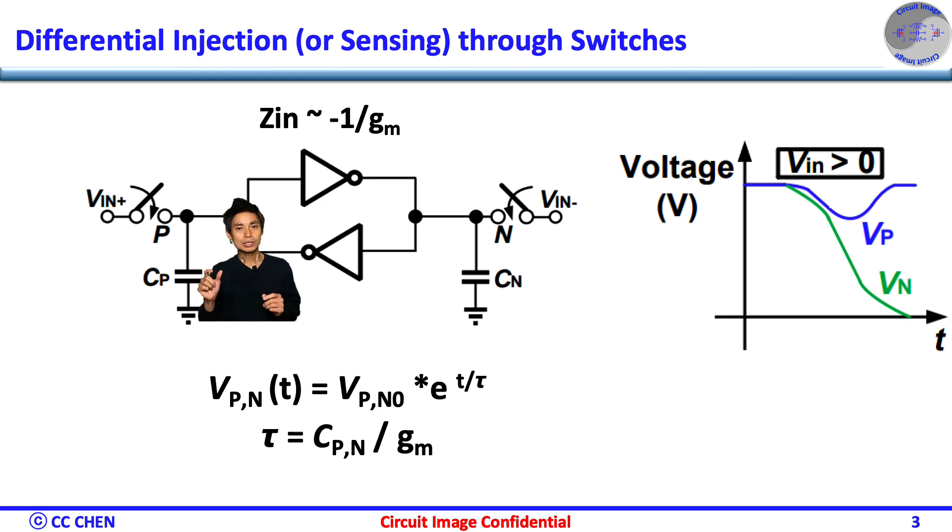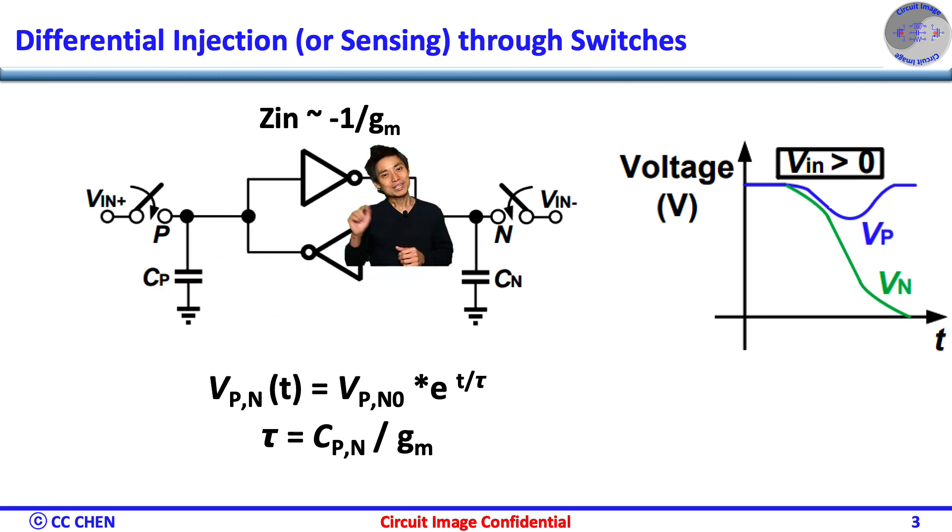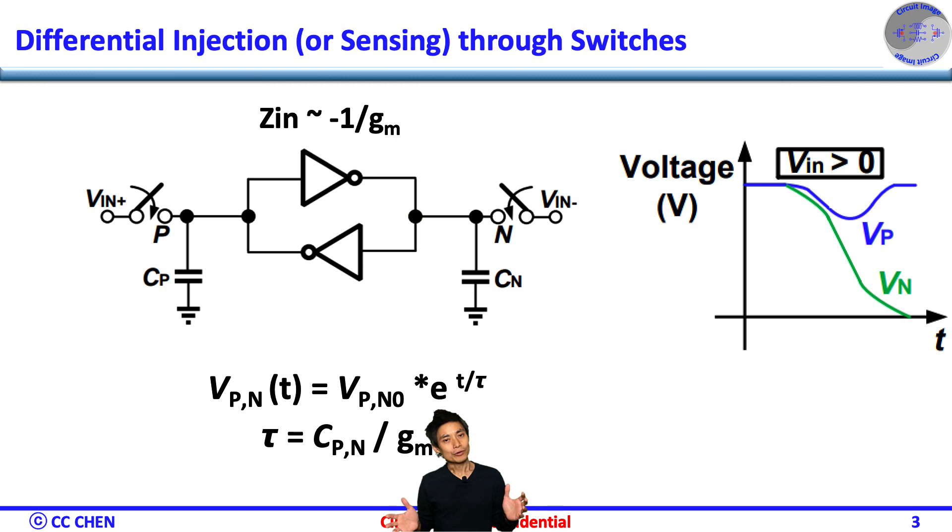Also, intuitively from the microelectronics 101, the impedance of the cross-couple pair is minus 1 over gm. Therefore, the time constant of the regeneration of the positive feedback is C over gm,